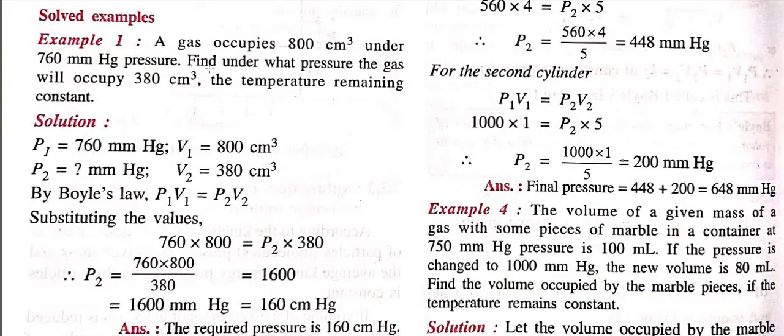And after that, you are asked to find out at what pressure, that means you need to find the value for p2, will occupy the volume of 380 cm³. So, this is the final volume, the value for v2, 380 cm³. Now, you need to calculate p2.